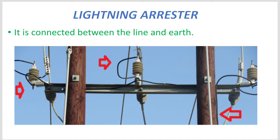The lighting arrester should be connected to each phase — R, Y, B — each phase separately has its own lighting arrester. The top side of the lighting arrester is the input, connecting to the live line part, connected to all 3 phases.